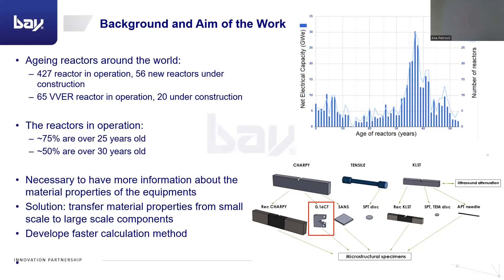One of the solutions which has been found is to place Charpy specimens inside the reactors. Therefore, these specimens have undergone the same aging procedure as the reactor pressure vessel, and we can determine relevant material properties from them. However, as the reactors are getting older, these specimens are also running out, and to have more information, we should use them to create additional miniature-sized versions.